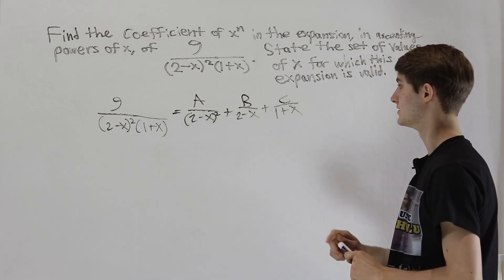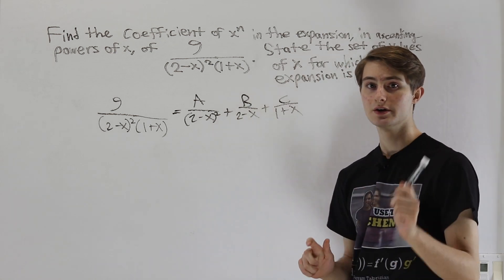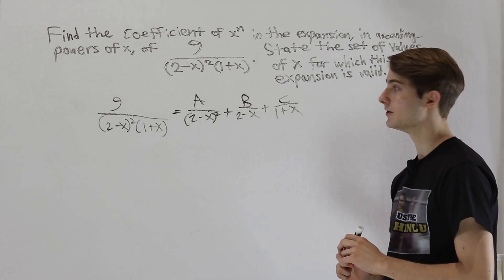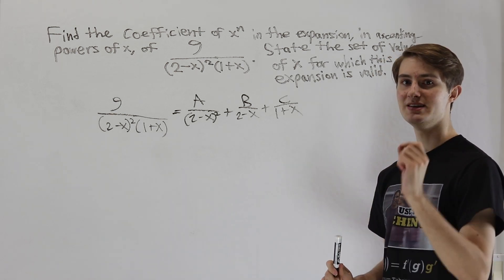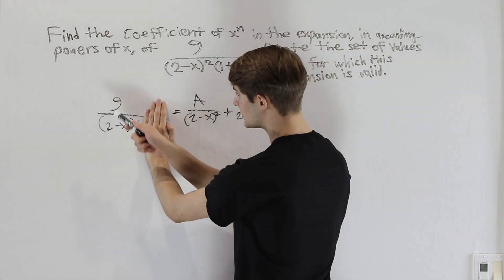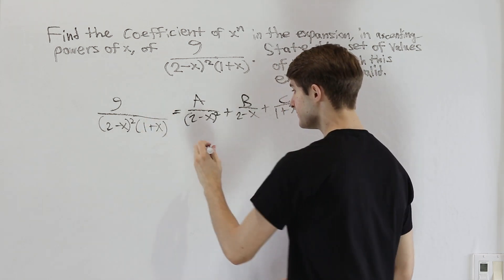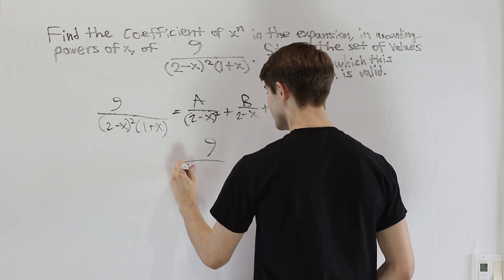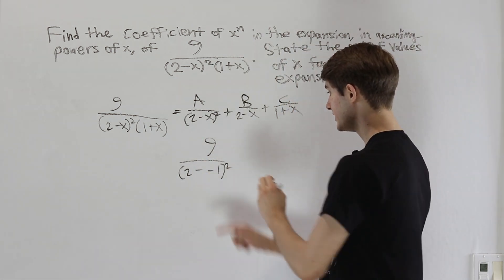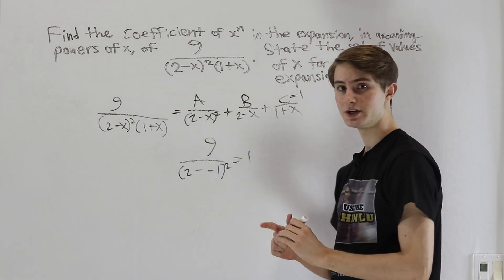Starting with (1 plus x) in the denominator — since it's only to the first power, we can use the cover-up method. Setting 1 plus x equal to zero gives x equals negative 1. Covering up (1 plus x), we get 9 over (2 minus x) squared evaluated at x equals negative 1: 9 over (2 minus negative 1) squared, which is 9 over 9, equals 1. So C equals 1.